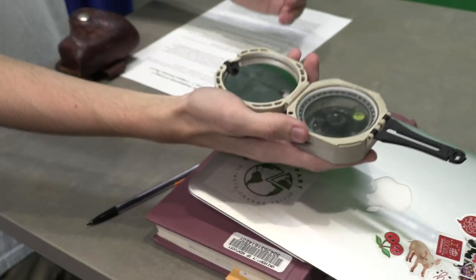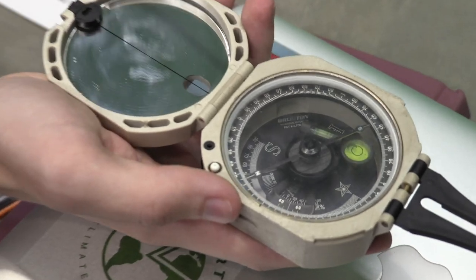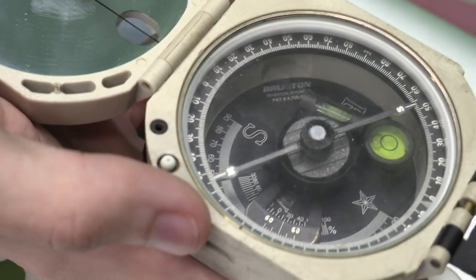So to find the strike or the dipping direction, you just take your compass, line yourself up with the slope, see what direction you're facing and that's it.